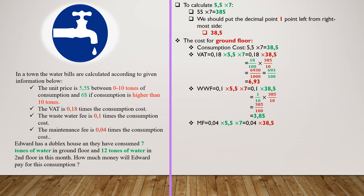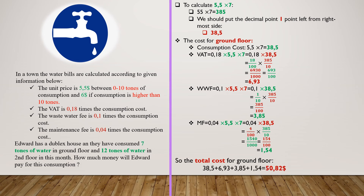The maintenance fee is 0.04 multiplied by consumption cost. We know that 0.04 is 4 divided by 100, and 38.5 is 385 divided by 10. If we multiply these fractions, we will have 1540 divided by 1000, and we know that it is equal to 154 divided by 100, which is 1.54 in decimal form. If we add up all these costs, we will find the total cost for the ground floor as 50.82 dollars.